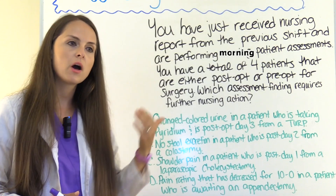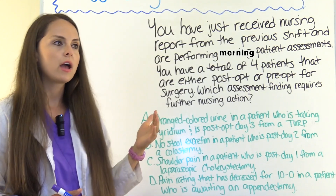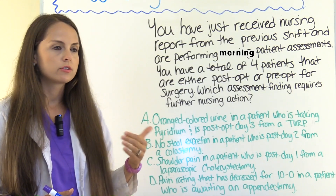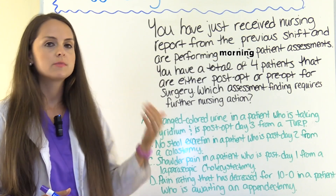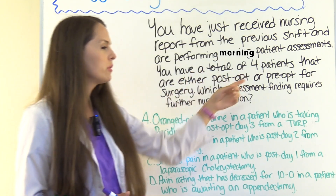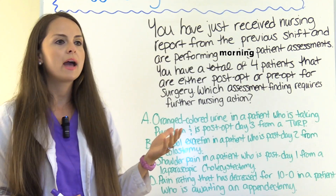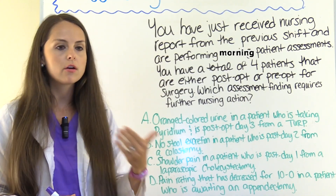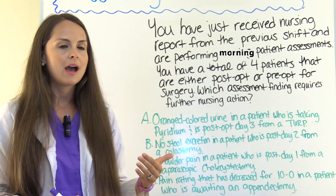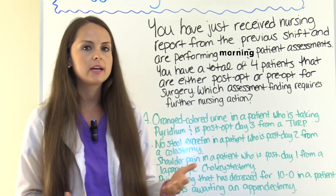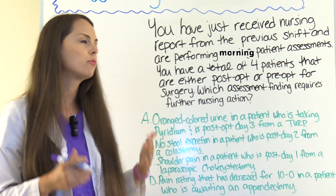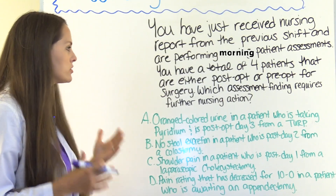We know from this scenario that we're taking care of post-op and pre-op patients. For post-op, think about what things are normal after surgery — for specific surgeries or specific cases. And for pre-op, think about what a patient should have done before surgery, or something that may be happening prior to surgery like a complication. You want to have those thinking hats on before you analyze your scenario.